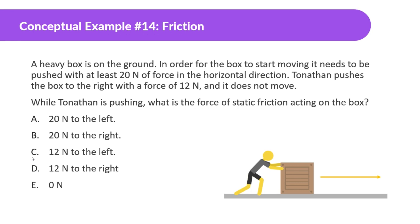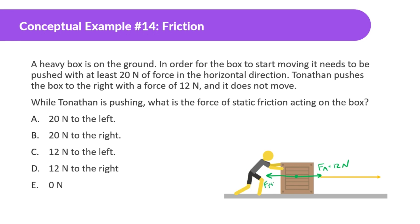A heavy box is on the ground. In order for the box to start moving, it needs to be pushed with at least 20 newtons of force horizontally. Tonathan pushes the box to the right with a force of 12 newtons and it does not move. What is the force of static friction acting on the box? Tonathan is pushing with 12 newtons and it's not moving, so the force of static friction also equals 12 newtons. Why not 20? Because if friction were 20, the free body diagram would show the box accelerating to the left, which won't happen. Static friction matches the applied force up to the maximum — here it didn't reach its maximum, so it's just 12 newtons to the left.